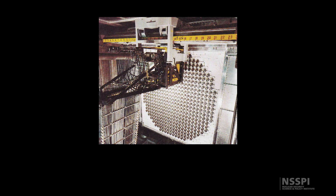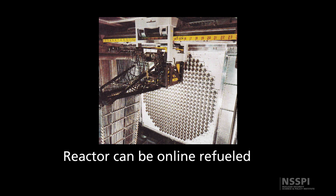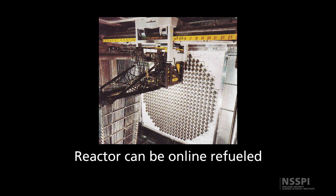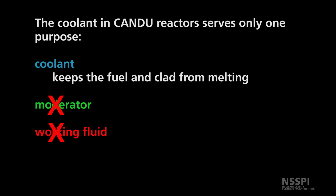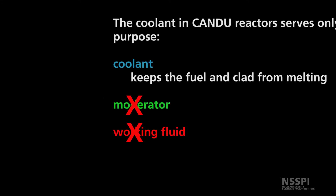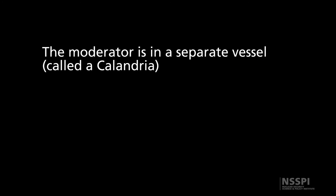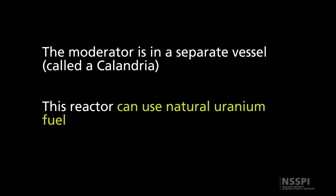One of the CANDU reactor's more interesting characteristics is that it can be online refueled — while the reactor is still operating, individual pressure tubes can be shut off, fuel pulled out, and new fuel inserted. The coolant here only serves the purpose of keeping the fuel and cladding from melting. The moderator, which is the heavy water in a separate vessel called the Calandria, moderates the neutrons. Since it has a heavy water moderator, it can use natural uranium fuel, because heavy water absorbs far fewer neutrons than light water, so the fuel does not need to be enriched.